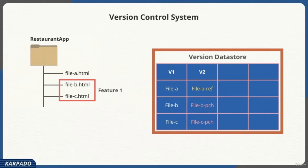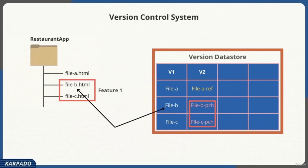Since no changes were introduced in file A, the VCS software only stores a reference to file A — just information about the location of its copy — to avoid unnecessarily copying untouched files and taking up disk space. For file B and file C, where new changes were introduced, the VCS software does not make a full copy either. Instead, it stores the difference between the modified file and the latest version of the same file. We call each one of these a patch set — the difference between the original file and its latest version — to save as much space as possible.